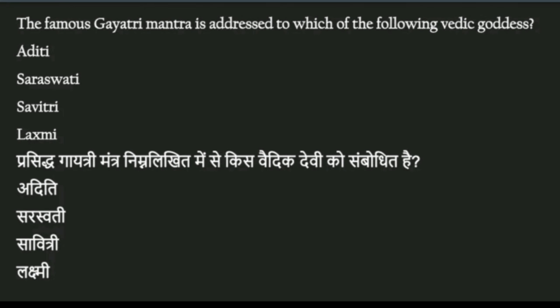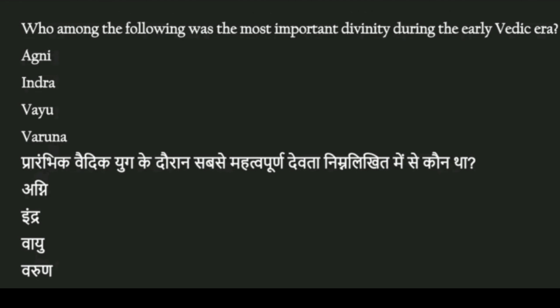Prashna: Prasiddh Gayatri Mantra nimnlikhit mein se kis Vedic devi ko sambodhit hai? Options: Aditi, Saraswati, Savitri, Lakshmi. Iska answer hai - Savitri. Prashna: Prarambhik Vedic yug ke dauran sabse mahatvapurna devta nimnlikhit mein se kaun tha? Options: Agni, Indra, Vayu, Varun. Iska answer hai - Indra. Thanks for watching.